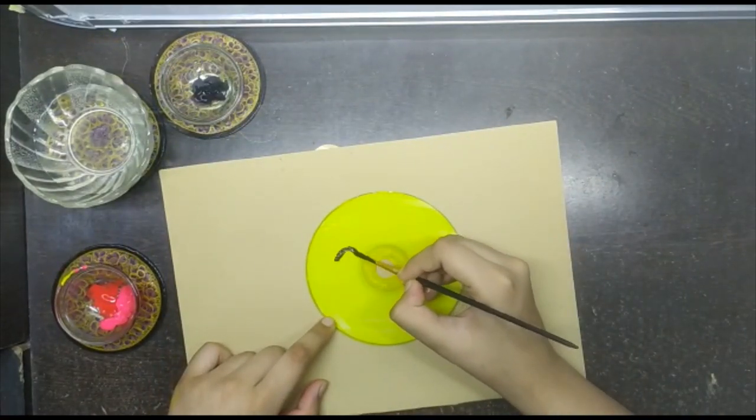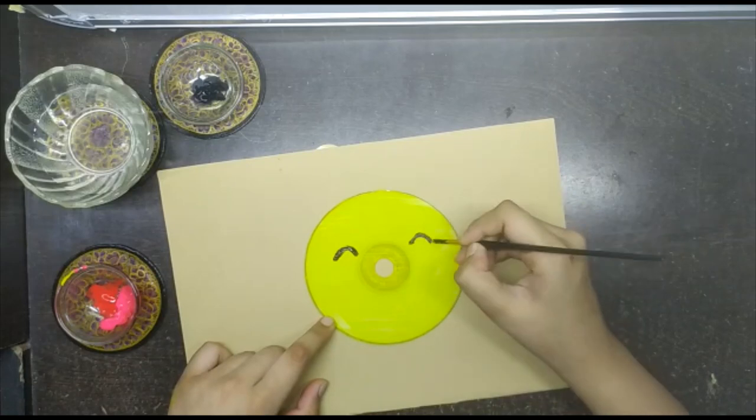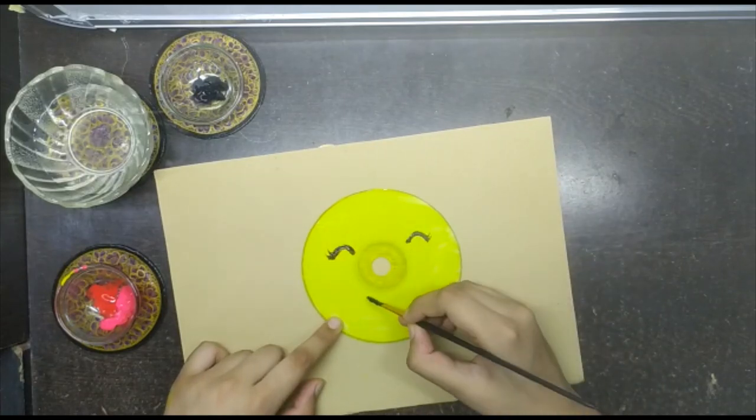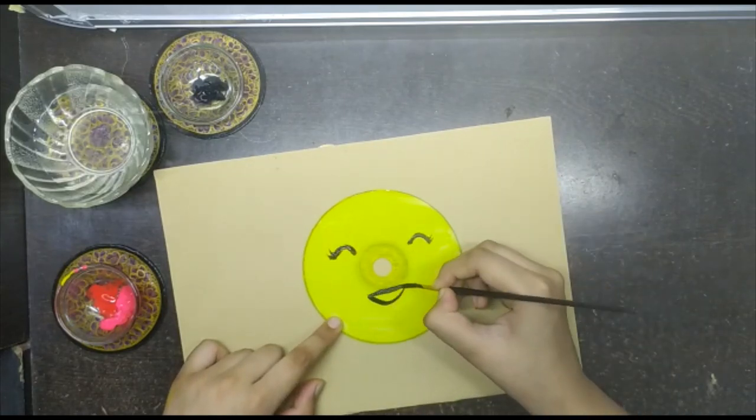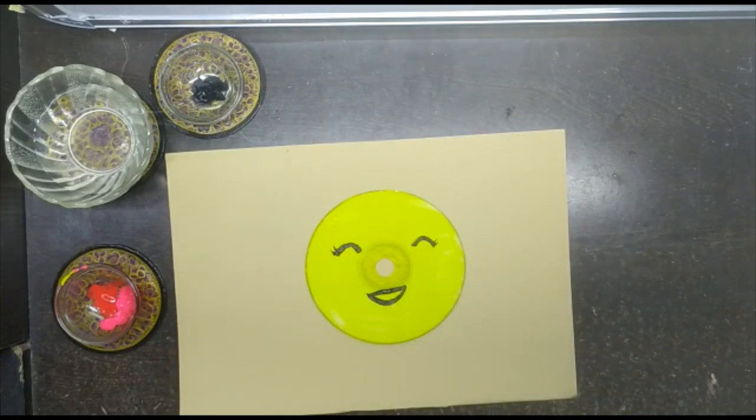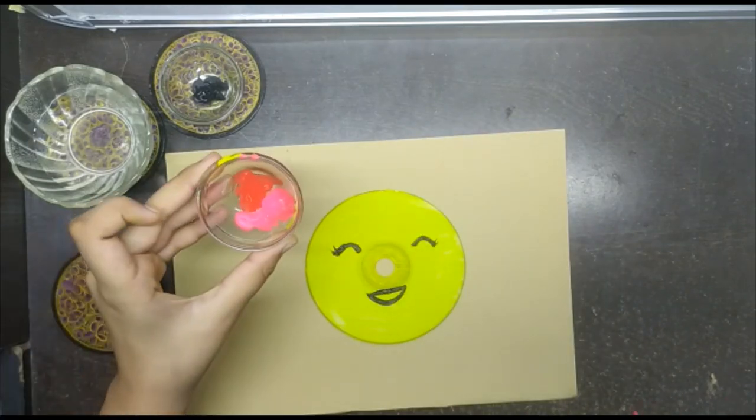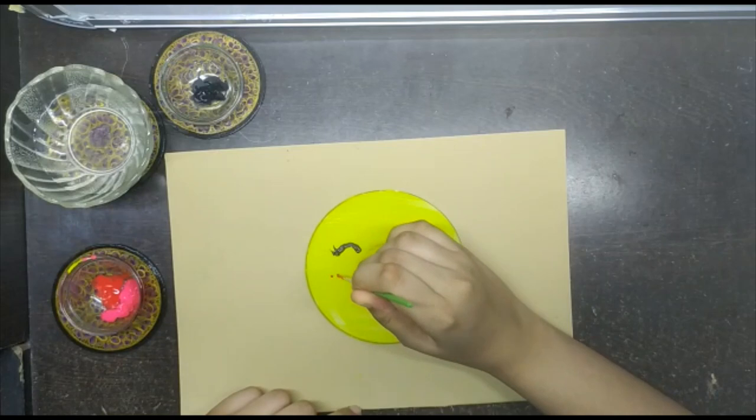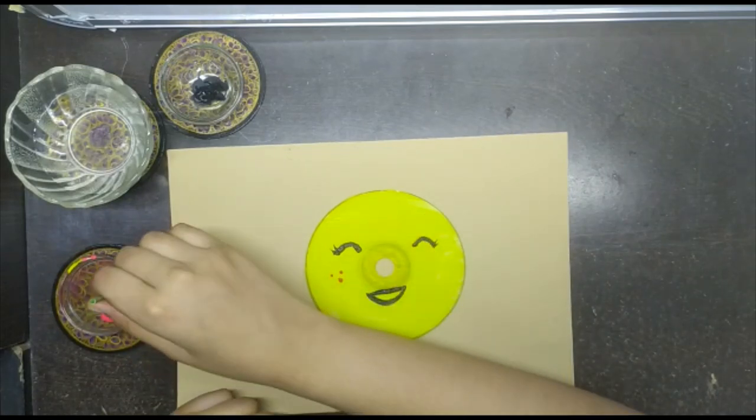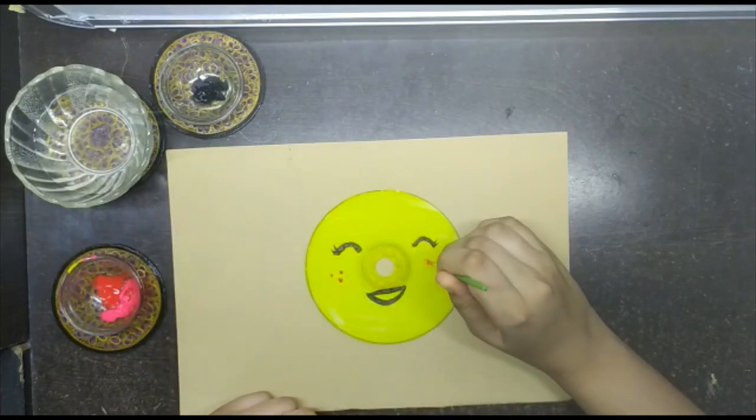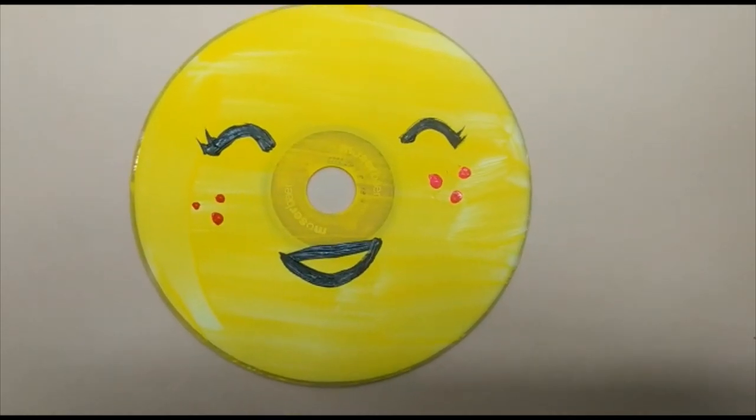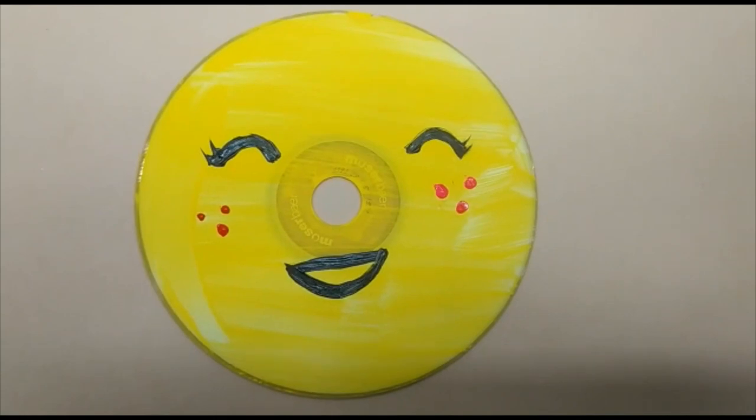I will just make two curves and then make some eyelids. And then draw a curve beneath it. Now I will decorate it with some red and pink paint color. I will make some dots on it with red color and then with pink color. Our painting work is done. Let's move on to step 2.